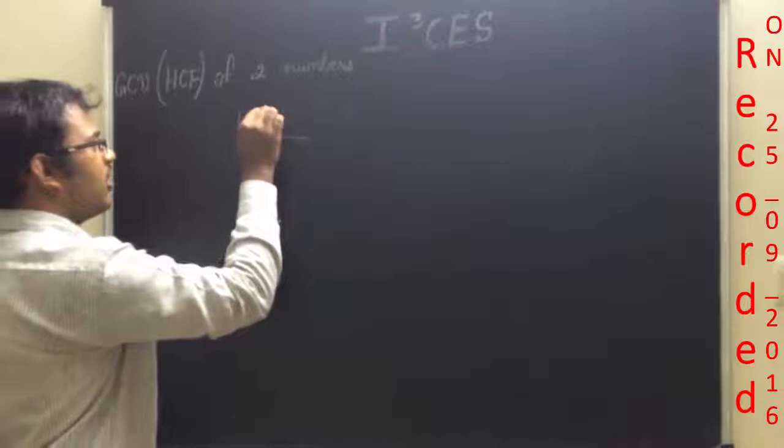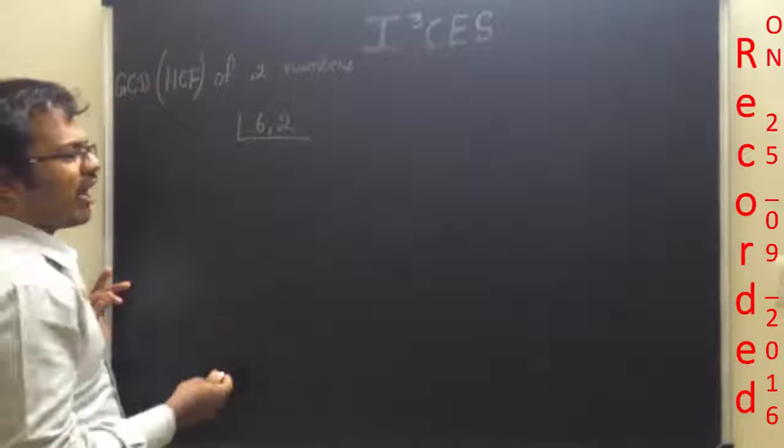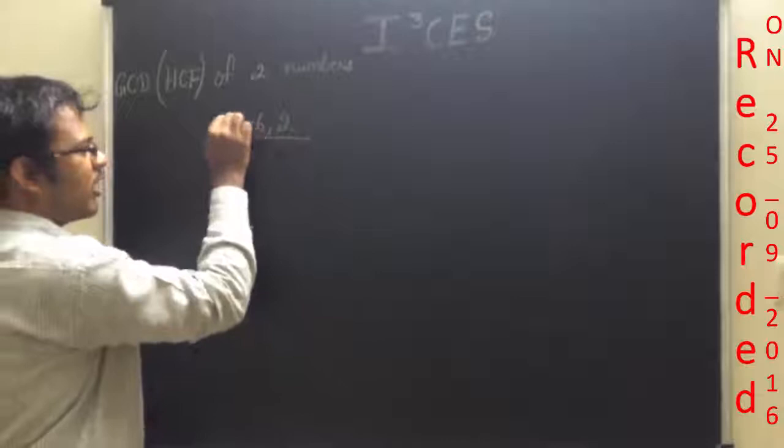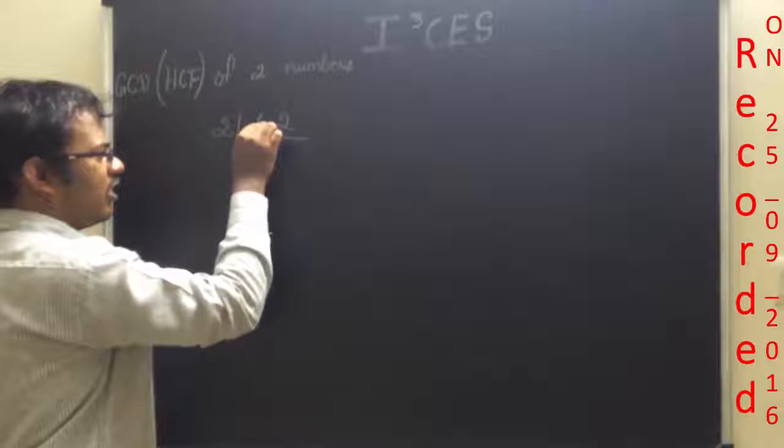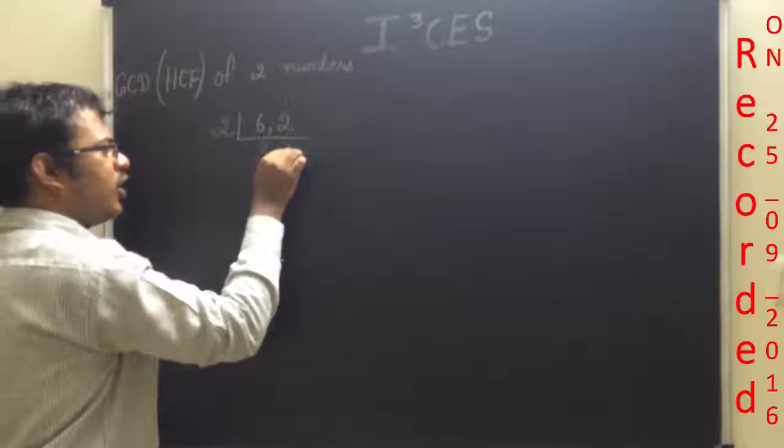Your 6 will have the two factors 2 and 3, and your 2 will have the factor only 2. So the common factor is 2, or in other terms the common divisor is 2. This is 2: 3 times are 6, and 2 one times are 2. So your HCF or your GCD is 2.